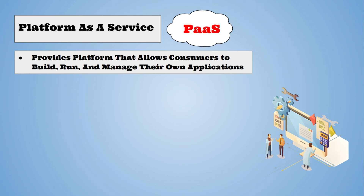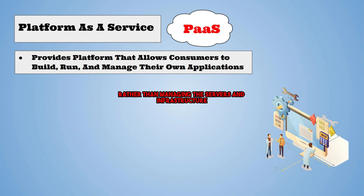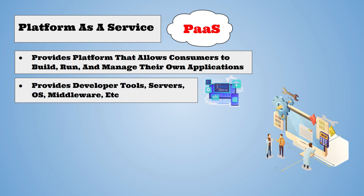The third cloud service model is Platform as a Service. This service provides a platform that allows consumers to build, run, and manage their own application. It can help developers focus more on writing the code rather than managing the servers and infrastructure. Along with the platform, this service also provides developer tools, servers, operating systems, and middleware like databases. All of those are extremely useful and necessary during the development lifecycle of applications.